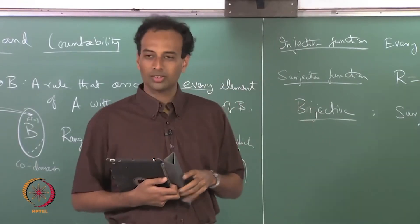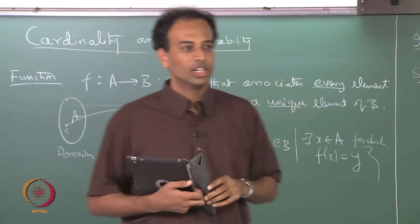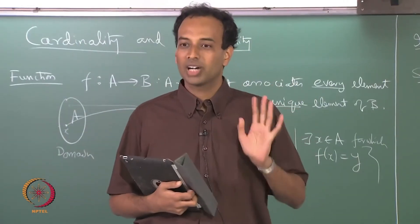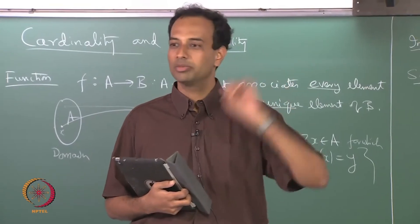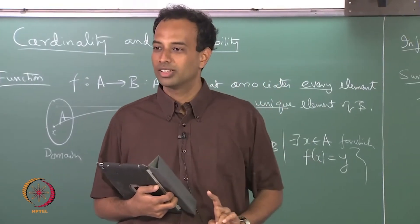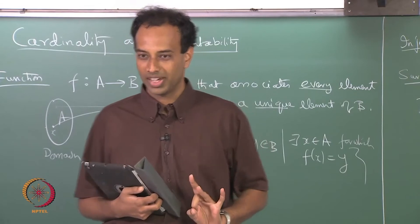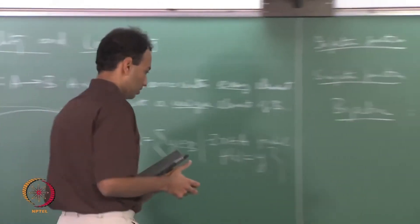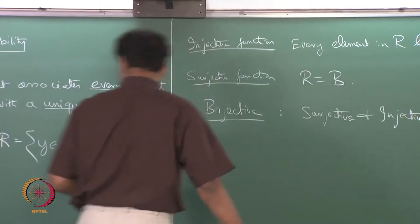What Cantor defined is: two sets A and B — not necessarily finite — have the same cardinality if you can find a bijection between A and B. That is the definition, so let us get into cardinality.